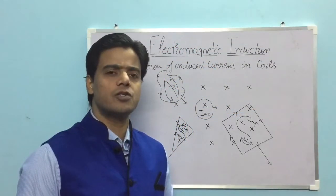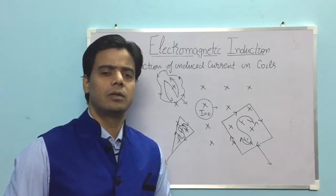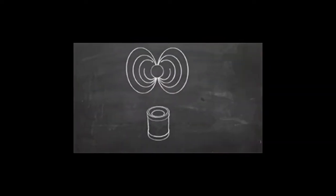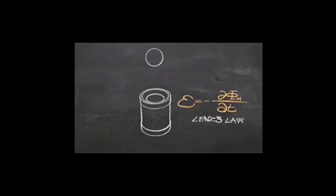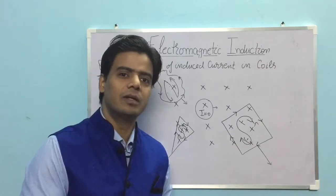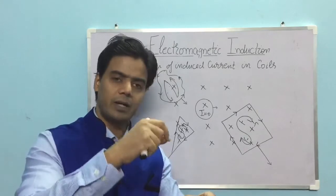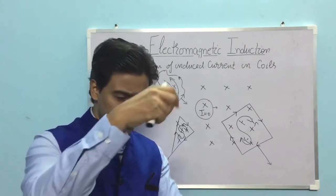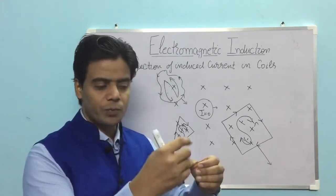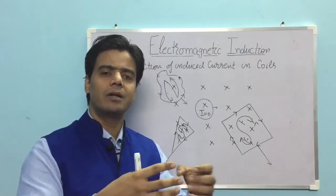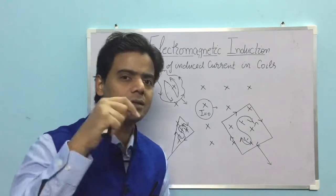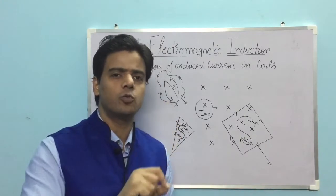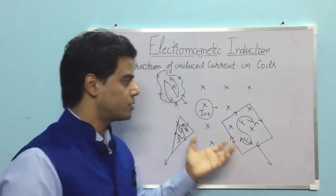Another application: in a video demonstration, a magnet is dropped through a metallic tube (which is not magnetic, so direct attraction doesn't apply). As the magnet moves through the tube, there is a variation in magnetic flux, so an induced current develops. By Lenz's rule, this induced current opposes the cause — the downward movement of the magnet — which is why the magnet moves very slowly through the metallic tube.